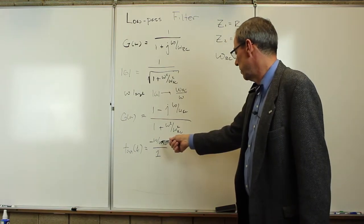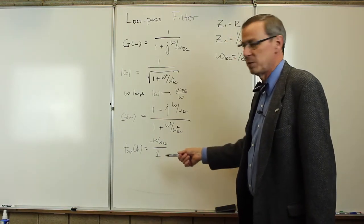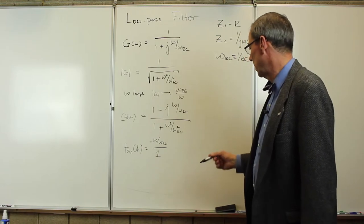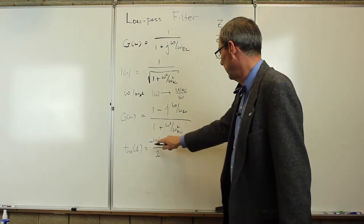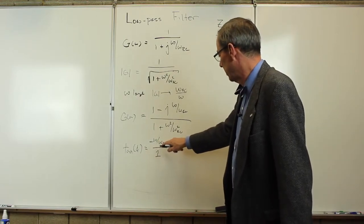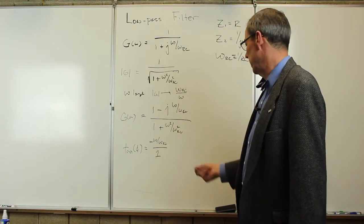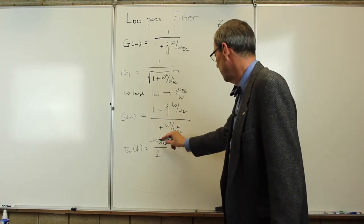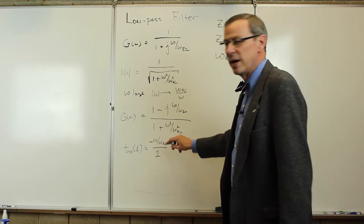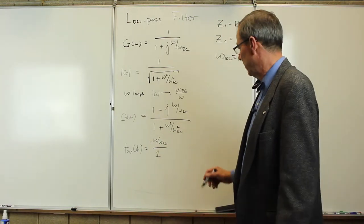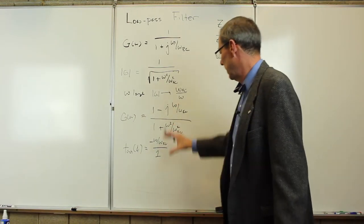The imaginary part is negative, real part is positive. It's in the fourth quadrant. As omega goes to 0, this goes to 0, but it's approaching from the negative side. As omega goes very large, this goes to minus infinity, it goes to minus 90 degrees. So there's the gain and the phase.